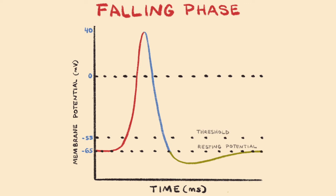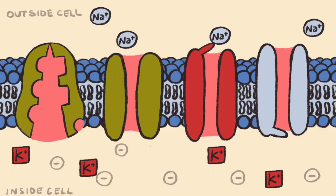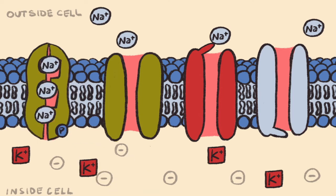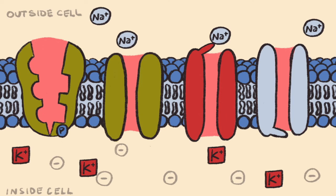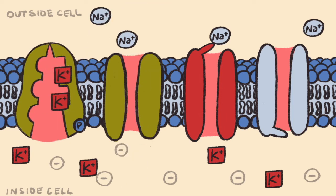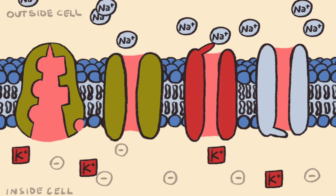Throughout the falling phase, sodium-potassium ATPase pumps and potassium leak channels continue to function as normal — sodium-potassium ATPase pumps are moving three sodiums out of the neuron in exchange for two potassium ions being moved into the neuron, while potassium leak channels are continuing to allow potassium ions to leak out of the neuron, only to have them be pumped back in in exchange for sodium ions.